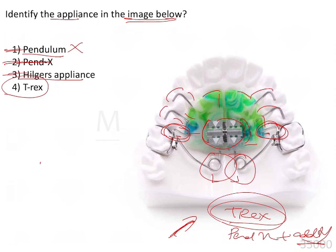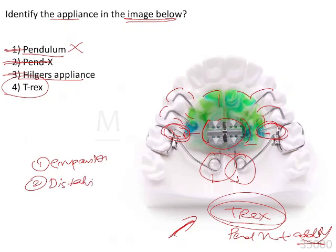These additional wire components are given to prevent the distalization of the molars before expansion has taken place. When we want expansion to occur first, and then after expansion has been achieved these wire components are cut off and distalization is undertaken. So whenever we want this two-stage process — first expansion, then distalization — that is when we use the T-Rex appliance.